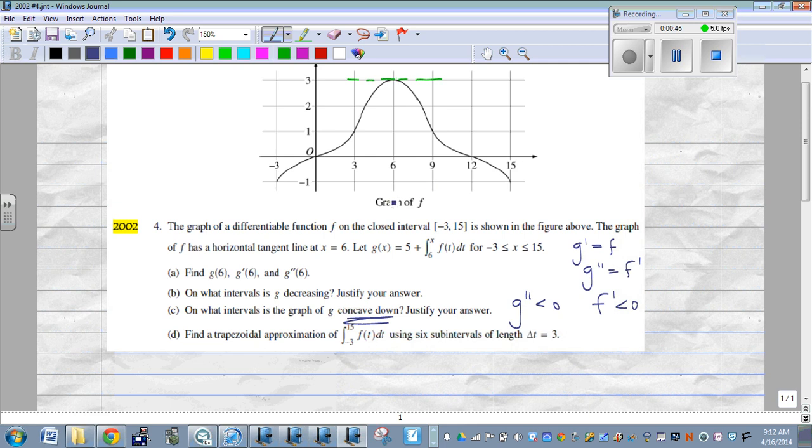Where is the slope of this graph negative? From 6 to 15, right? This area right here, slope is negative that whole time.